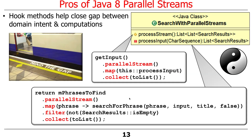What functional programming gives you is the ability to close the gap between the domain intent and the computations that express that domain intent. Domain intent is what problem you're trying to solve — the functional requirements you're trying to address. By using streams and parallel streams, you can make it straightforward to read the code from top to bottom, illustrating how the various processing gets done in the right order and with the right logic. You don't have to write loops or conditions — you can read top to bottom and see what the behavior of the program is.